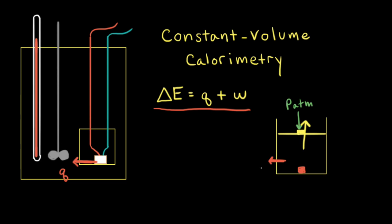In this case, the heat that's transferred q is done under constant pressure, so we can write q_p here. And by definition, the heat that's transferred at constant pressure is the change in enthalpy, delta H.